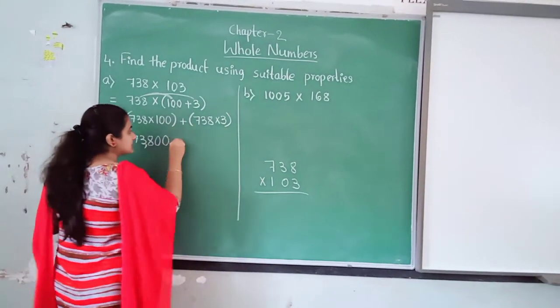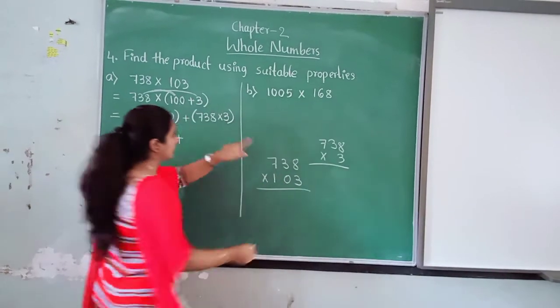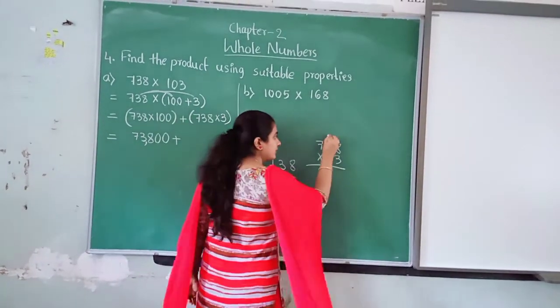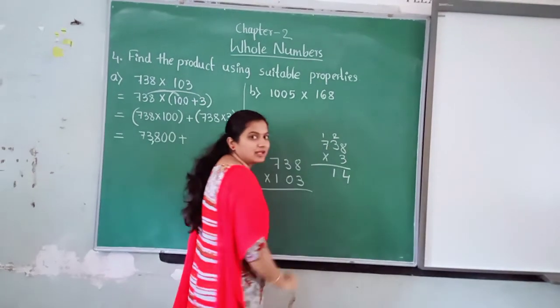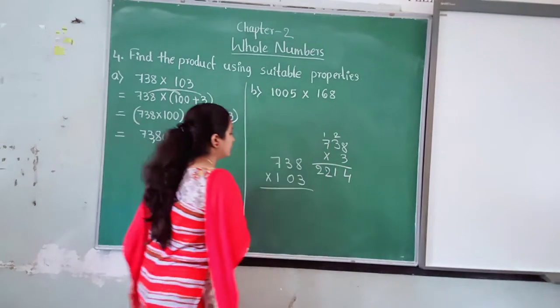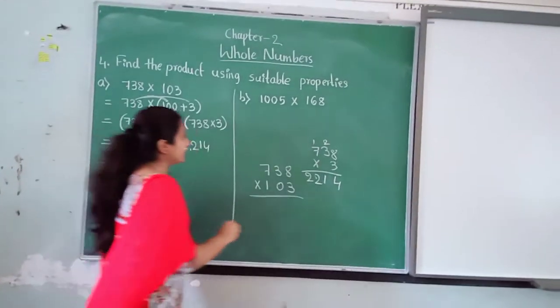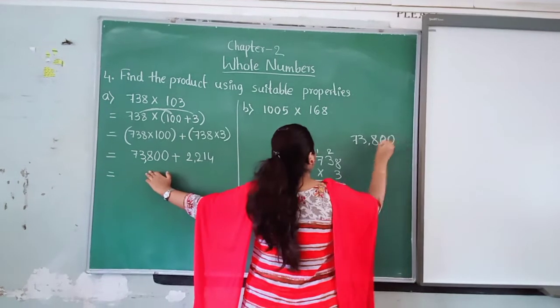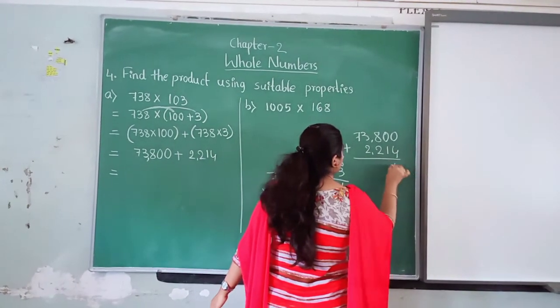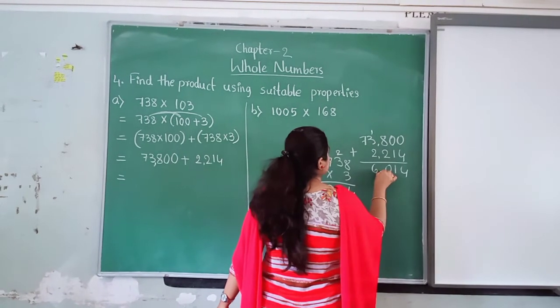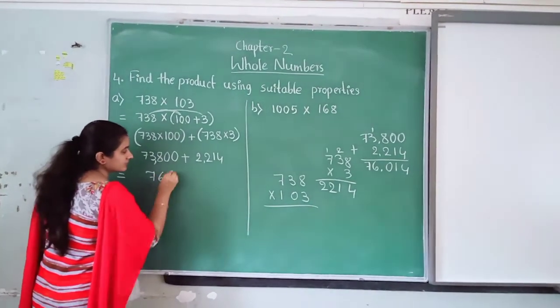Now, you have to do rough work. 738 into 3. Rough work here. 3 eights are 24. 3 threes are 9 plus 2, 11. 3 sevens are 21 plus 1, 22. 2214. Now, add this 200. Do rough work again. 73,800 plus 2,214. 4, 1, 10, 6, 7. 76,014. Understood, children?